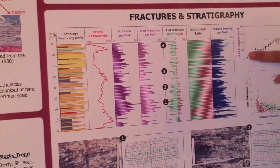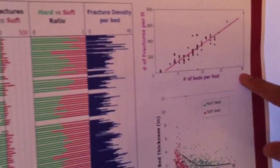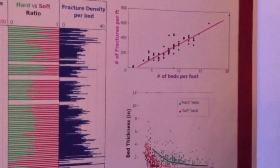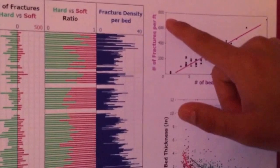We made a cross plot between the number of fractures per bed and the number of beds per foot. And we have, as you can see, an excellent direct relationship between them. The more beds per foot, the more number of fractures per foot.